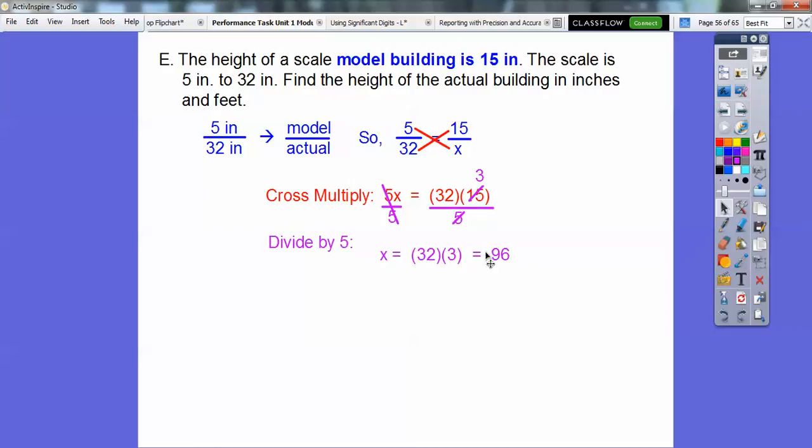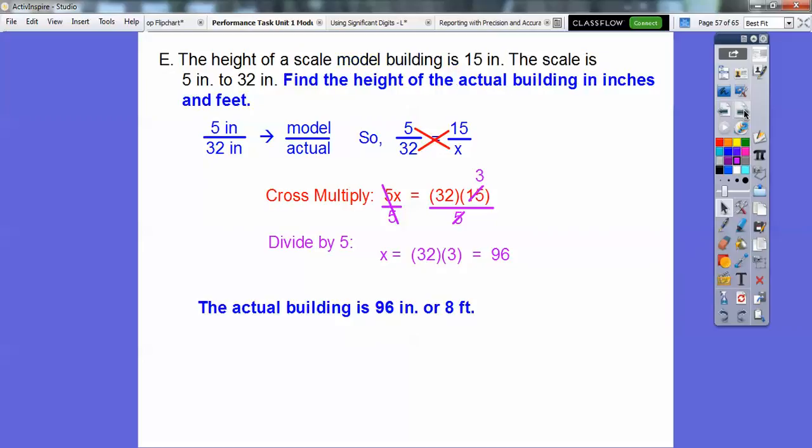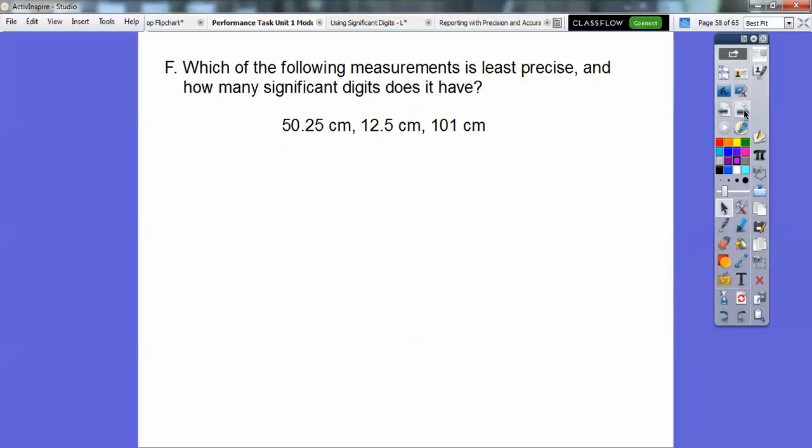Let's answer the question. 96 what? What does that mean right there? It says find the height of the actual building in inches. Well, this is in inches, because all of this stuff was in inches right here. So this is 96 inches, so the height of the building is 96 inches, and 96 divided by 12, because 12 inches per foot, so you get 8 feet. So 96 inches or 8 feet. So make sure you answer the question in the context of the problem. I can't emphasize that enough, you guys.